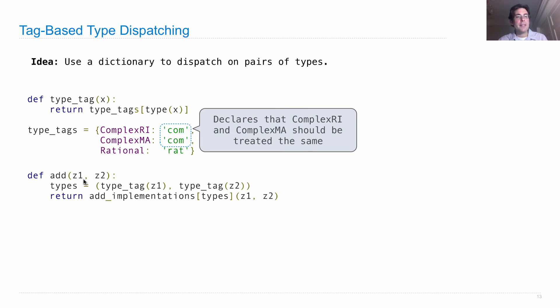And then, how do we actually add two numbers together? Well, first we have to get their type tags. So, the type tag of z1 is computed, the type tag of z2 is computed. That's stored as types, which is a tuple of different com or rat strings.